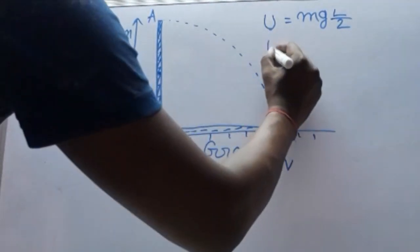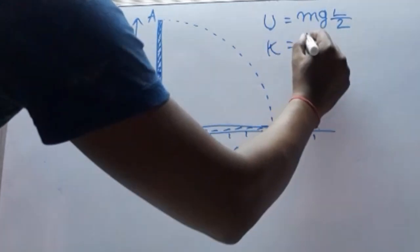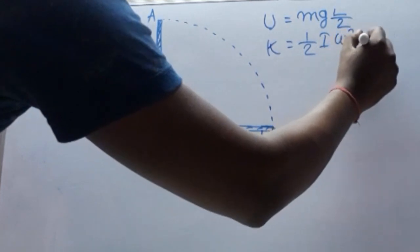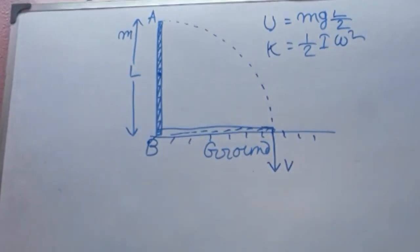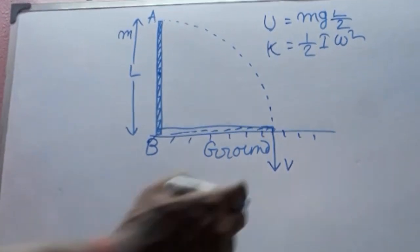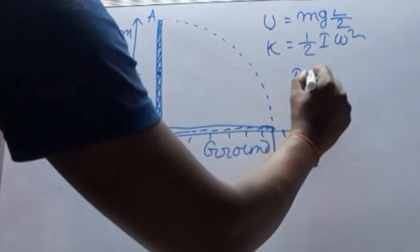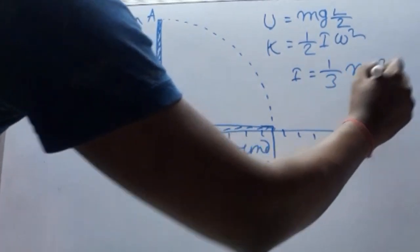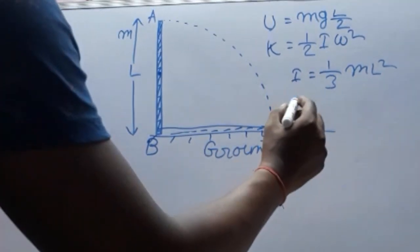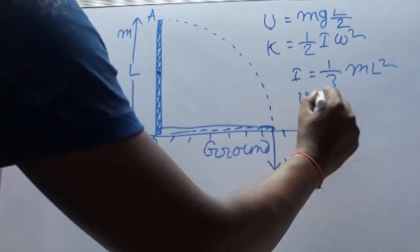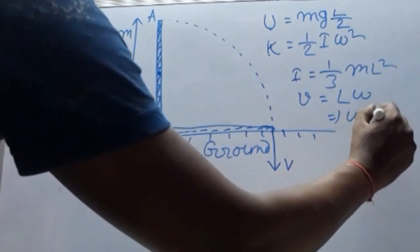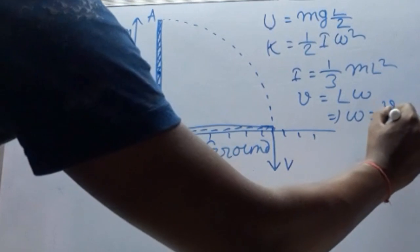So kinetic energy becomes half times moment of inertia times angular velocity squared, where the moment of inertia of the rod about point B is given by I equal to one-third mL squared, and V equal to L omega, which means omega equal to V by L.